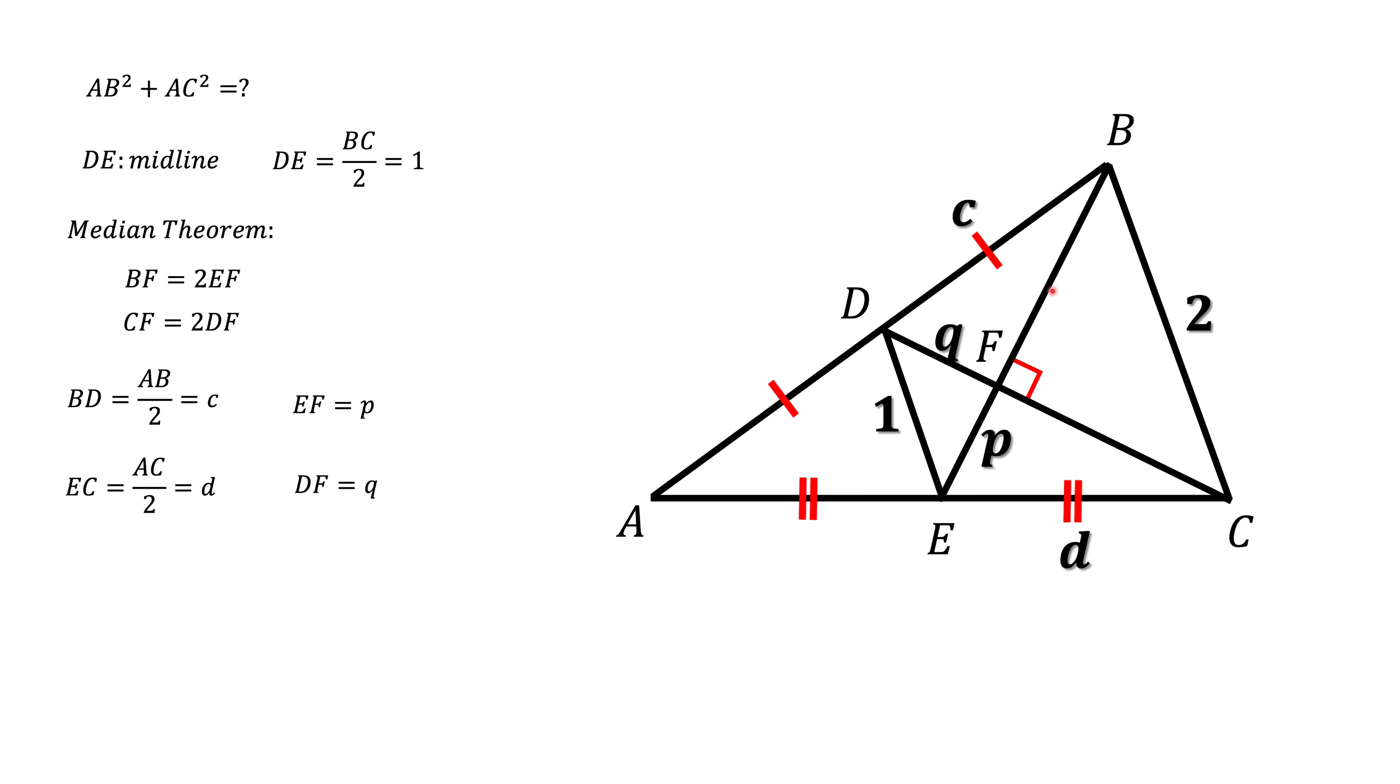We know that BF should be twice as long as EF, so BF will be 2P, CF will be 2Q, and now what we have here, we got four right triangles right here, and let's consider three of those four.